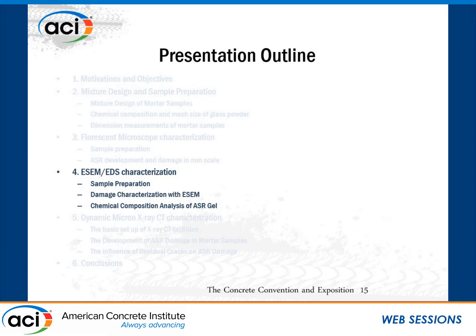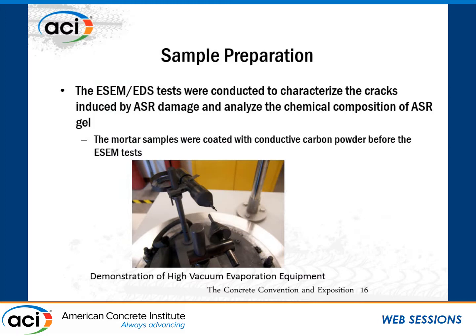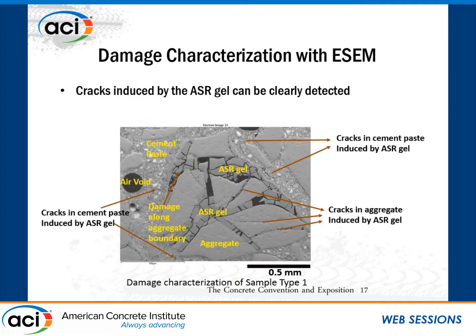We further examined the samples with SEM and SEM-EDS to characterize the damage and perform chemical composition analysis. As the mortar samples are non-conductive, the samples were first coated with a conductive carbon layer before SEM testing. The SEM can examine damage in concrete with high resolution. The different phases inside the mortar samples can be more clearly separated, including the cement paste, the glass aggregate, and the generated ASR gel which fills the cracks. The results from SEM are similar to those from optical microscopy — cracks inside the aggregate and along the aggregate boundary can both be observed.